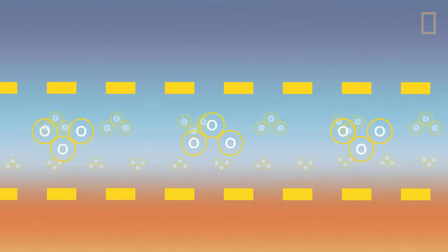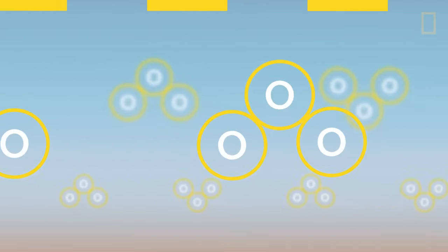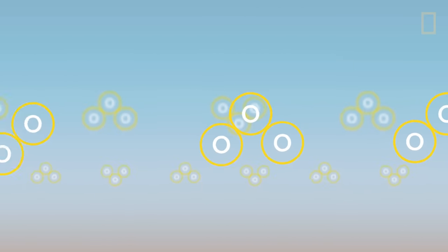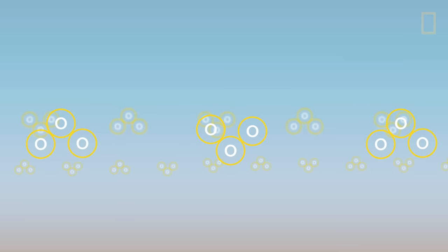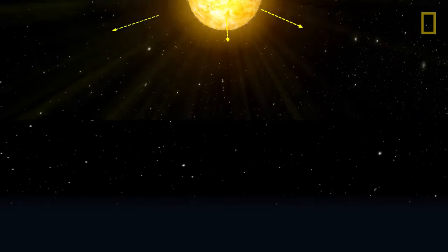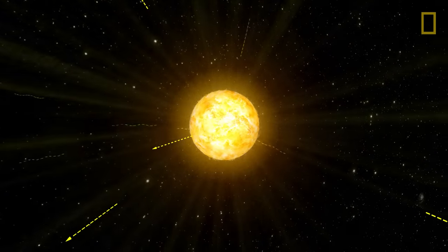The ozone layer is made up of a highly reactive molecule called ozone, which contains three oxygen atoms. Ozone is a trace gas in the atmosphere. There are only about three molecules for every 10 million molecules of air, but it does a very important job.